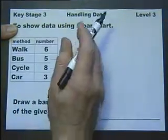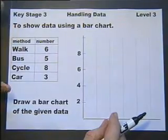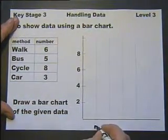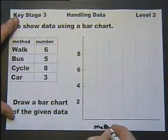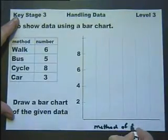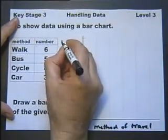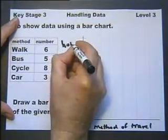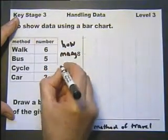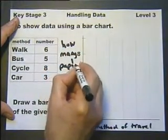The first thing we need is a pair of axes. We should always label our axes — along here I'm going to write 'method of travel', and up here I'll write 'how many pupils'. We must always label our axes.